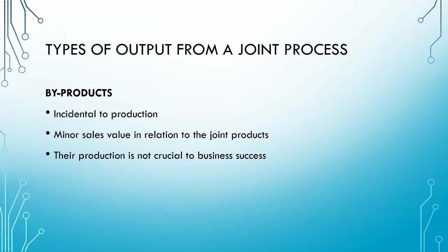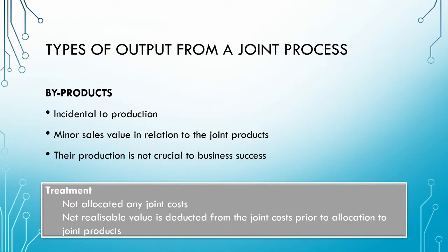Next, we have our by-products. By-products are those products which are incidental to the process — they are not our main products, we didn't intend to make them, and their production is merely a consequence of producing our joint products. Generally, they have a minor sales value in relation to the joint products, and their production is not crucial to the success of the business. Importantly, we do not allocate any of the joint costs to the by-products. Rather, we calculate the net realizable value — which is the selling price of the by-product less any further processing costs — and we deduct this net realizable value from the joint costs before we allocate the joint costs to the joint products.